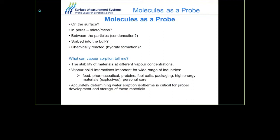So where can vapor sorption occur? Vapor sorption can occur on the surface of the material, in the pores — micropores and mesopores — between particles in the form of condensation, absorbed into the bulk of the material, or chemically react to form hydrates or solvates if you are using an organic vapor.